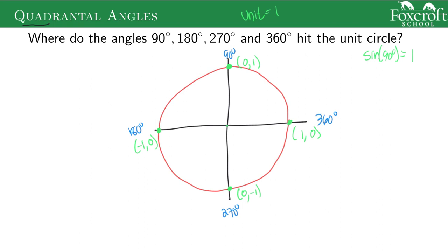These four quadrantal angles quickly give us some values of sine and cosine. So if I want to know cosine of 270, I look at 270, that dot, and I know the x value is 0. So I'm going to use these values, I can find sine and cosine quickly.